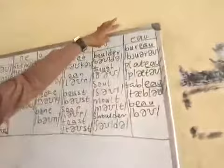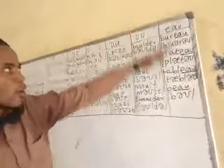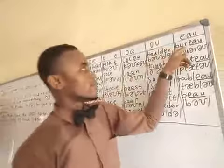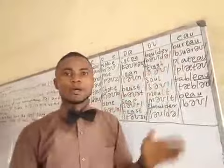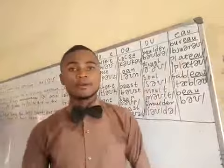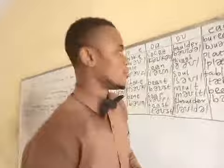Then we go to E, A, U. When you see these three letters in all these words, you pronounce them as /əʊ/. We have "bureau" — pay attention to this: "bureau." We don't say "bureau" or whatever — say "bureau." Then "plateau," "tableau," and "bow."